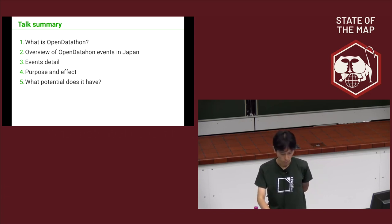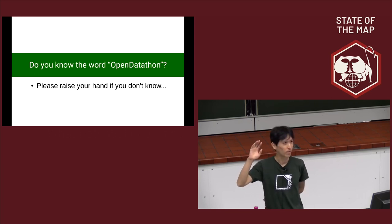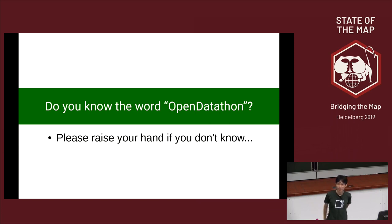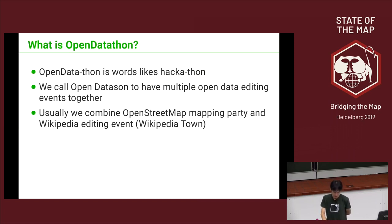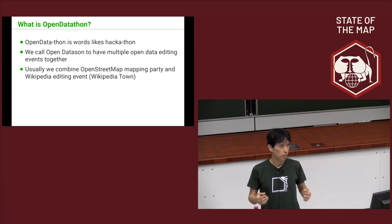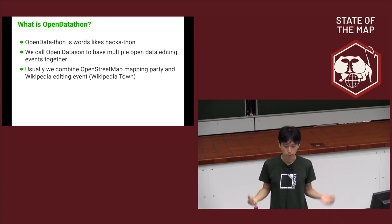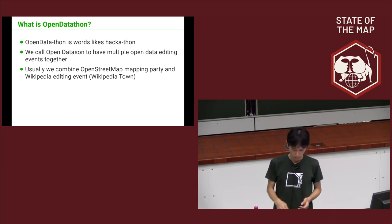One question: do you know the word open datathon? Please raise your hand if you don't know. Open datathon is like hackathon — it borrows the word. Open data combined with marathon becomes open datathon. We call open datathon a combination of multiple open data editing events. Usually the combination is open story map, mapping party, and Wikipedia editing events.